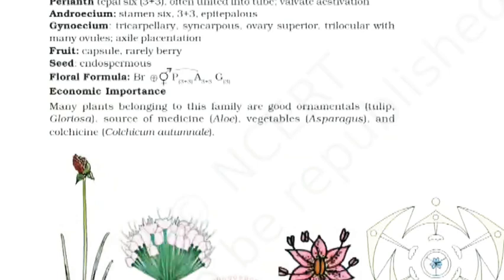Economic Importance: Many plants belonging to this family are good ornamentals — tulip, Gloriosa; source of medicine — aloe; vegetables — asparagus; and Colchicum autumnale. Figure 5.23: Allium cepa (Onion). Plant A, Plant B, Inflorescence C, Flower D, Floral Diagram.